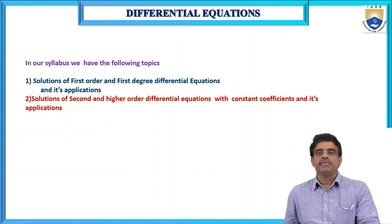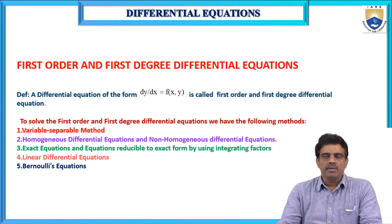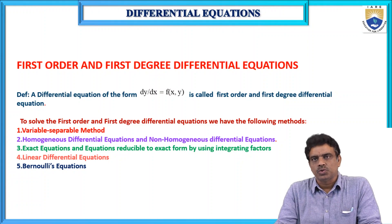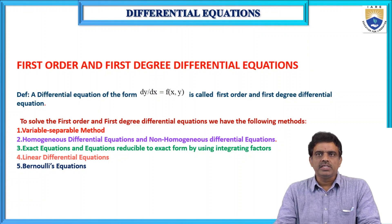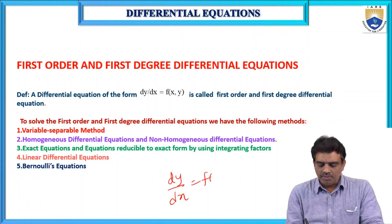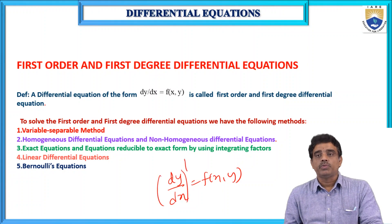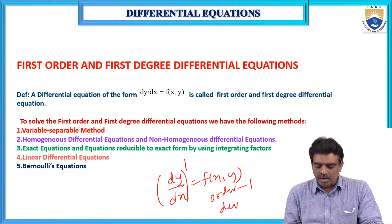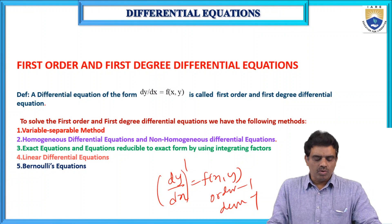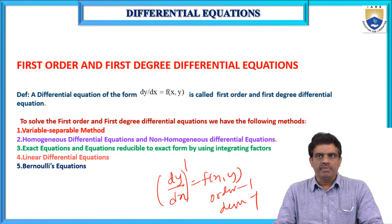What is the first order and first degree differential equation, and what is its standard form? First order means the highest derivative occurring in the equation is dy/dx only, and the power is also one. So, dy/dx = f(x, y) is the general form of the first order and first degree differential equation. The order is one and the degree is also one.